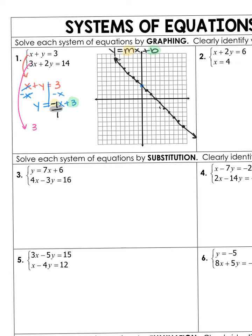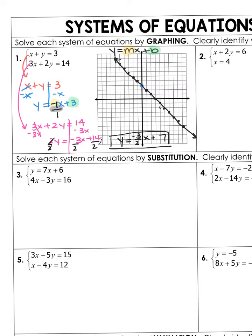This one says 3x plus 2y equals 14. If I'm trying to get the y all by itself, I'm going to have to move that positive 3x first. So I'm going to subtract 3x to the other side. When I do that, I'll end up with 2y equals negative 3x plus 14. I'm close to getting y by itself — I just need to get rid of that 2 in front of the y. So I'll divide everything by 2. I end up with y equals negative 3 over 2, which is negative 1.5 — it doesn't reduce, it stays negative 3 over 2. And then plus 14 divided by 2 is just 7. So this will be my second equation to graph.